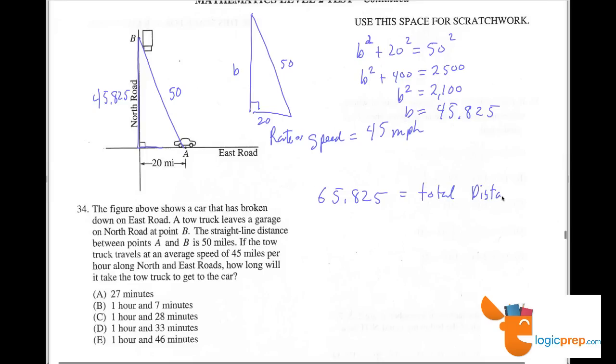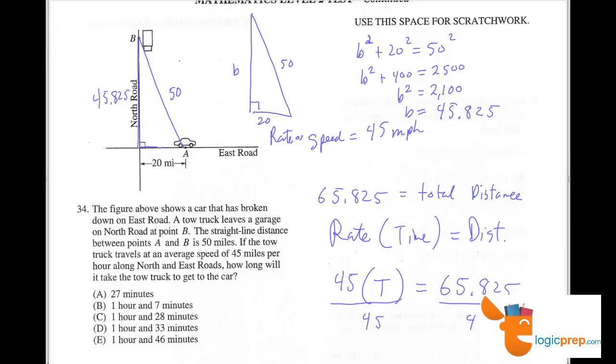Now, we know that rate times time equals distance. It's the equation all the parents are always afraid of. Now, our rate was 45 miles per hour. We want to know how long it took us to travel this distance of 65.825. So I'll divide both sides by 45. And let's see what I get.